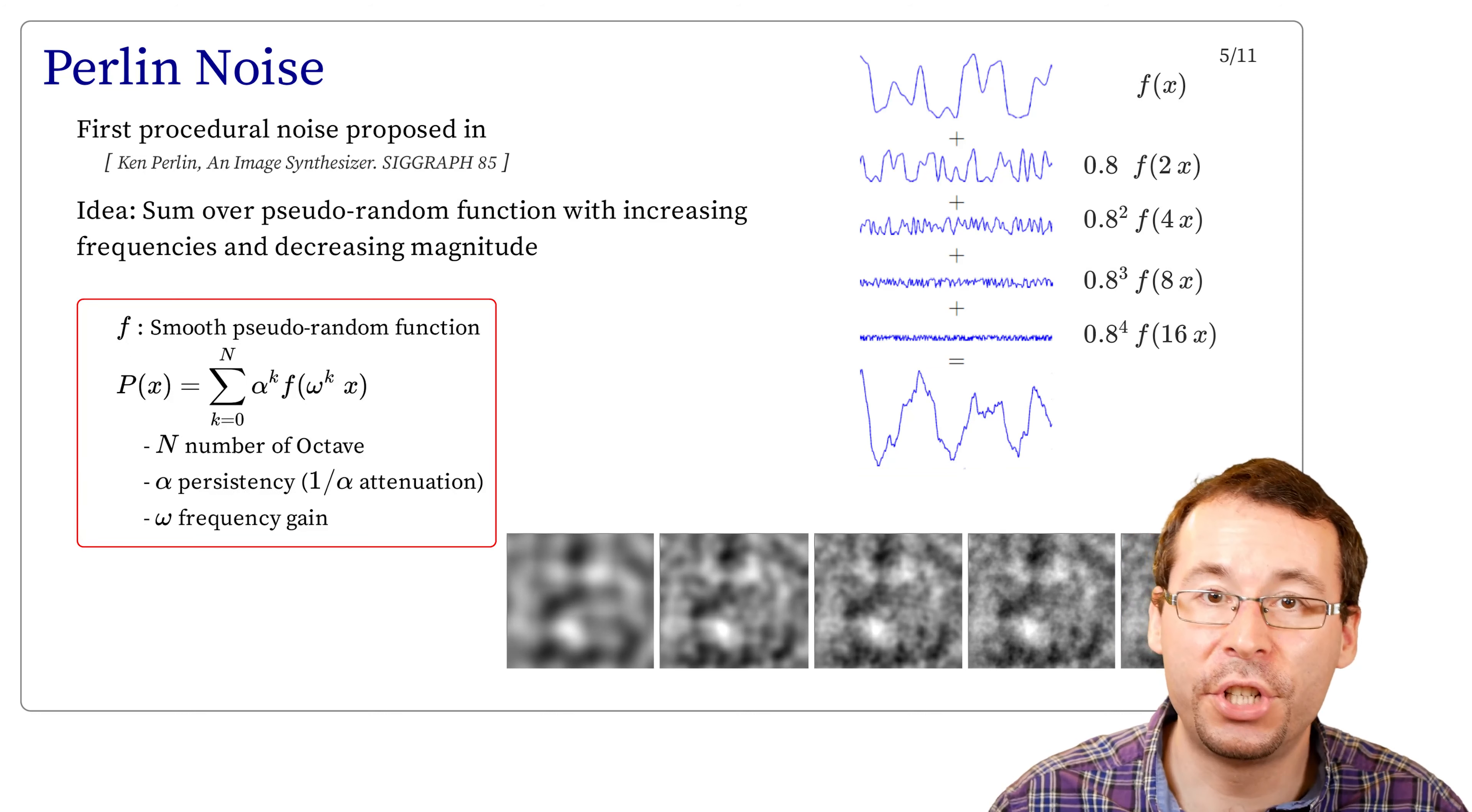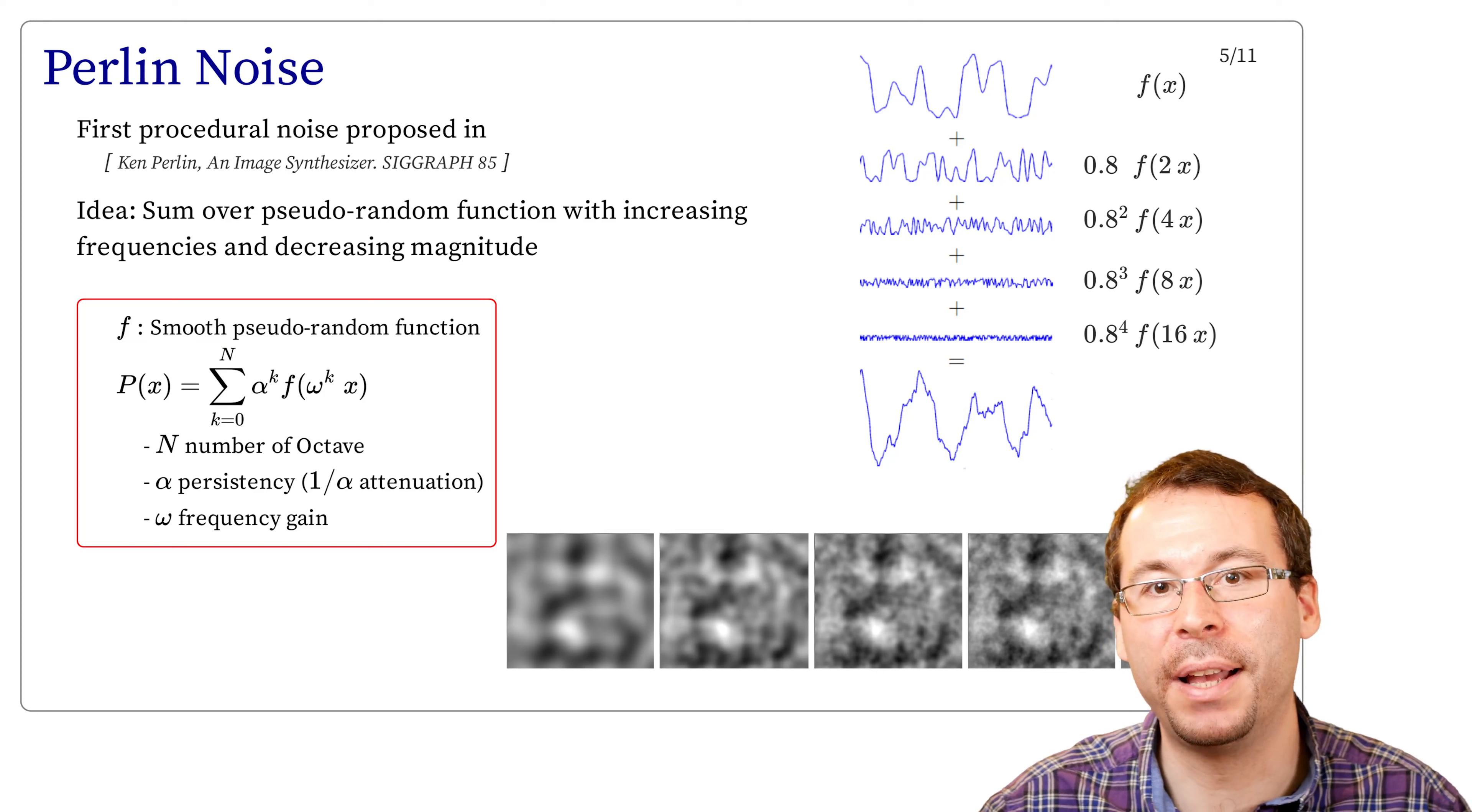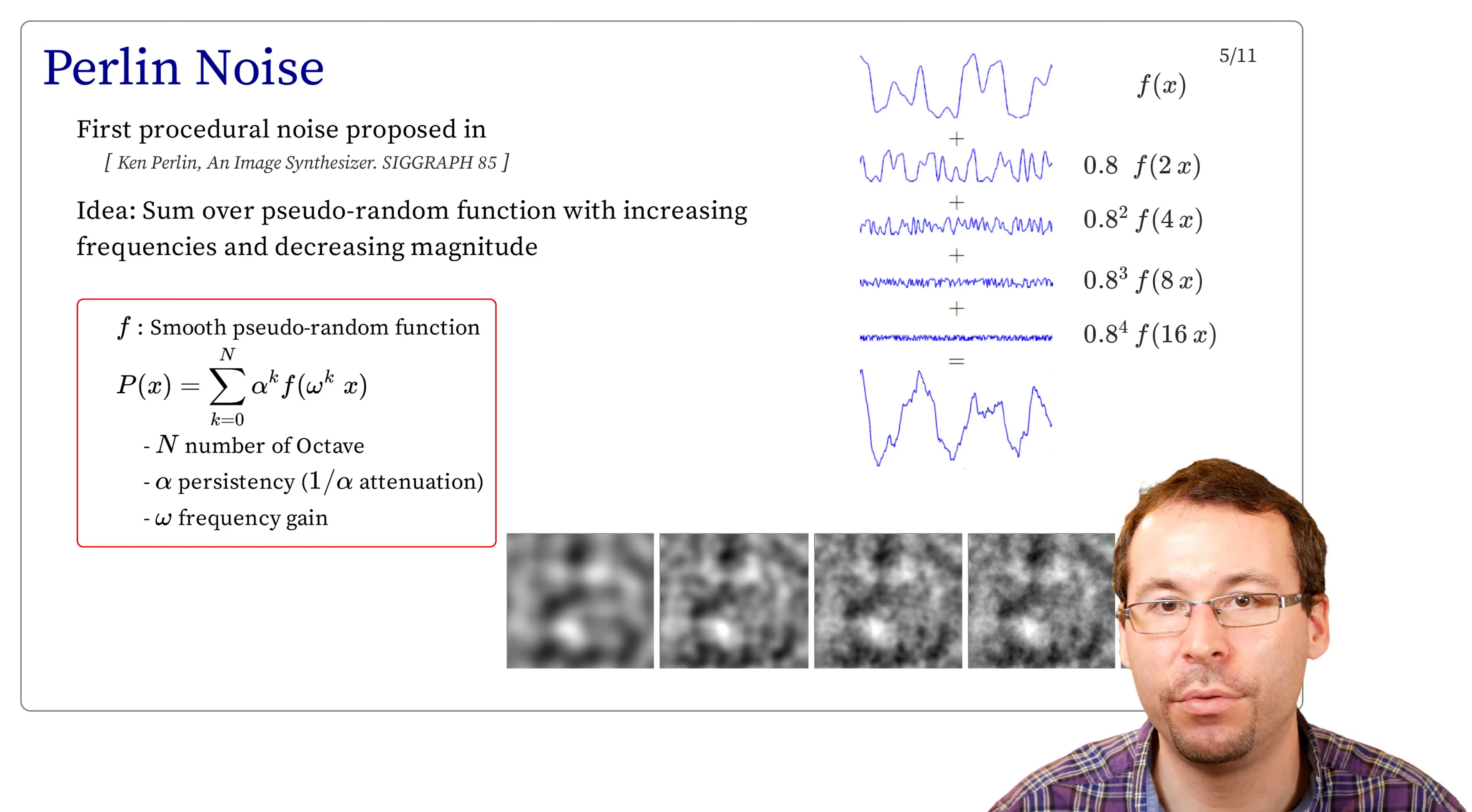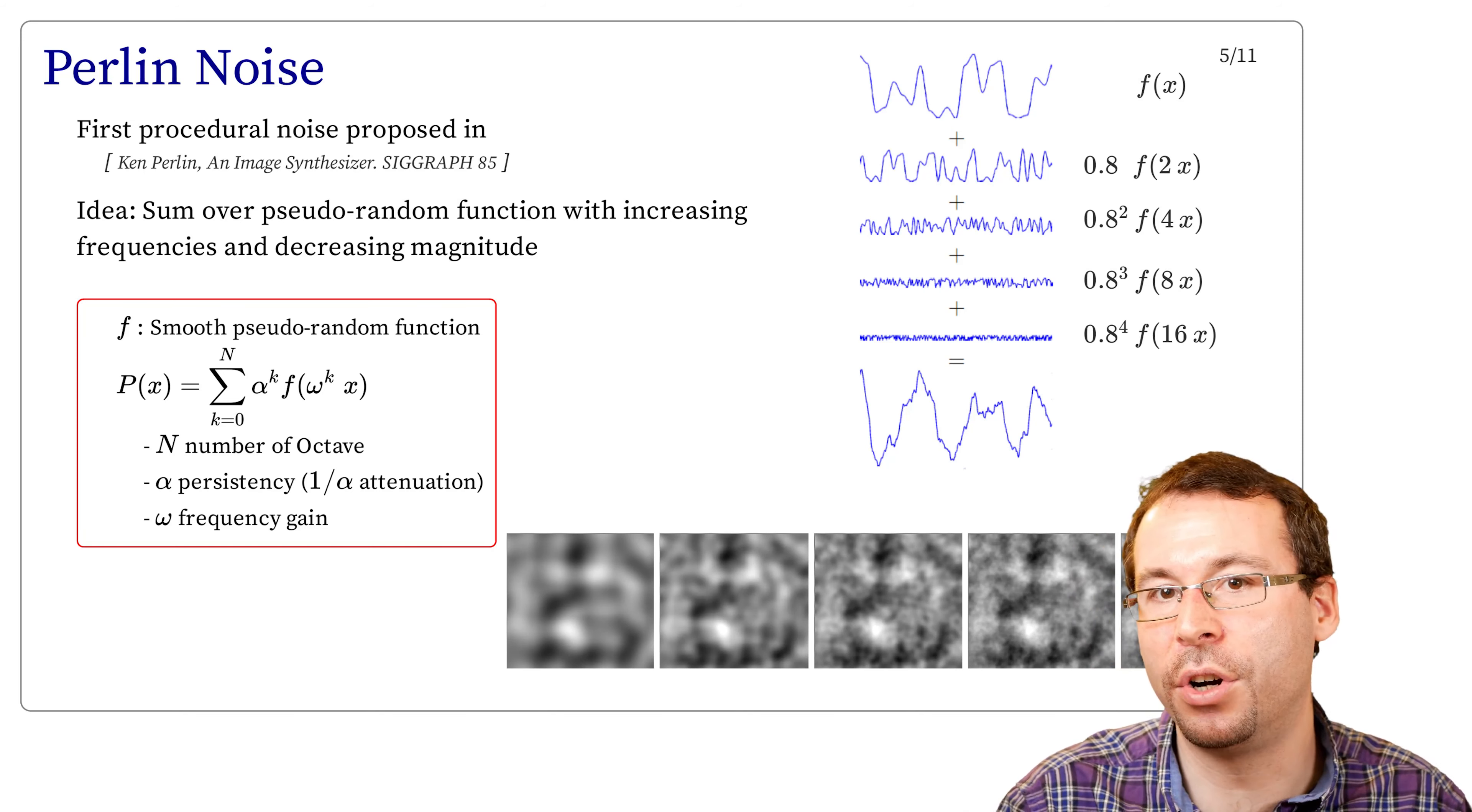And this is the general expression of the Perlin noise P. It is a sum over what we call some octaves. We have an octave, and for each octave, the magnitude decreases by the factor alpha, which is less than 1, which is called persistency, and an increase of frequency given by the factor omega.